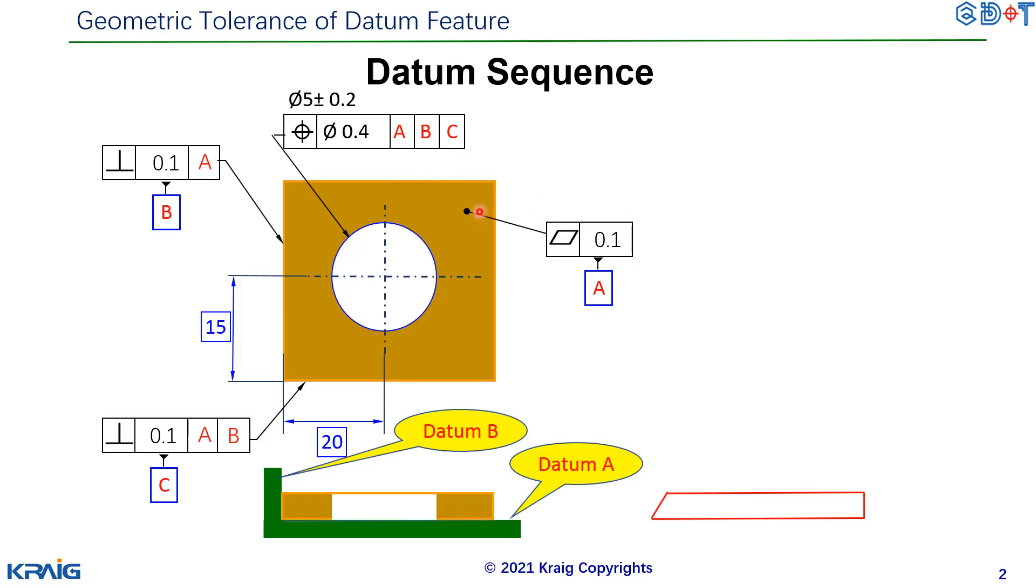But for datum B, there's a perpendicularity to datum A. This is the perpendicularity to datum A. What does it mean? It means this side surface is allowed to have a perpendicularity error.